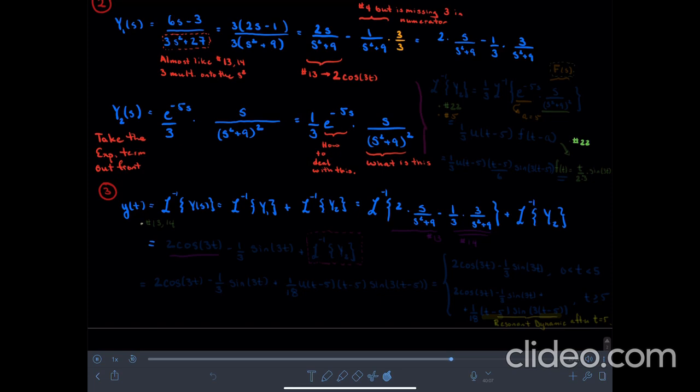So what is all this stuff? Can we make moves on it? Well, yes we can. And we can use table entries number 14 or 13 and 14 to find that this term right here, done by table entry number 13, the first of my terms is 2 times cosine of 3t. And then the second term here is done by table entry number 14, and that is going to be minus one third times the sine of 3t. And then I add all this to the inverse Laplace transform of capital Y2.